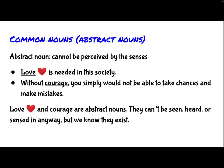The second type of the common noun is abstract noun. Abstract noun cannot be perceived by the senses. For example, love is needed in this society. Without courage, you simply will not be able to take chances and make mistakes. Love and courage are abstract nouns. They can't be seen, heard, or sensed in any way. But we know they exist.